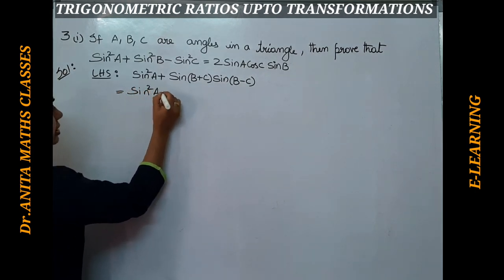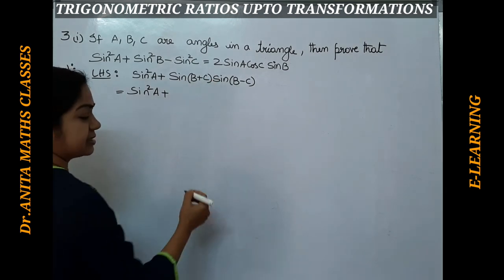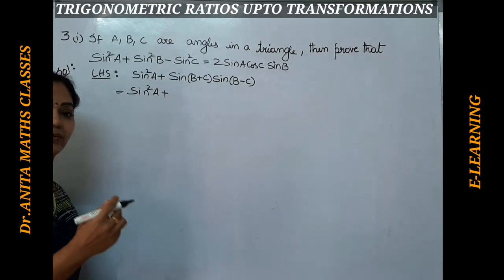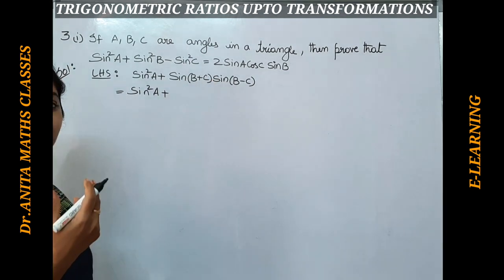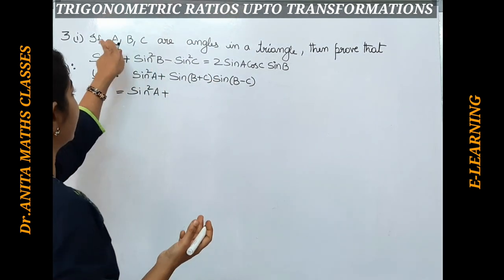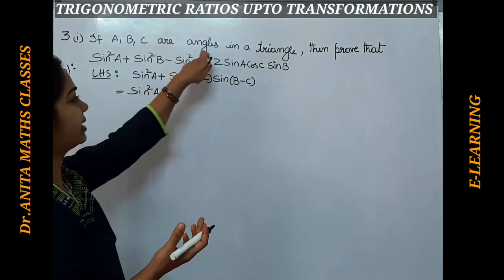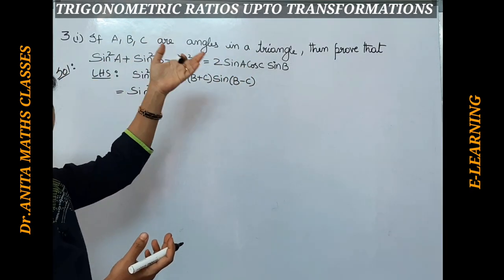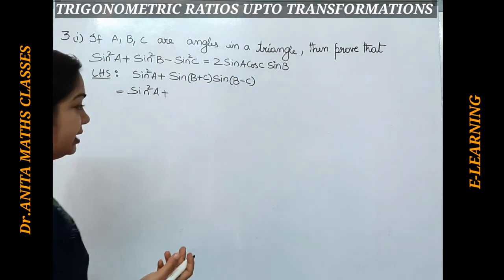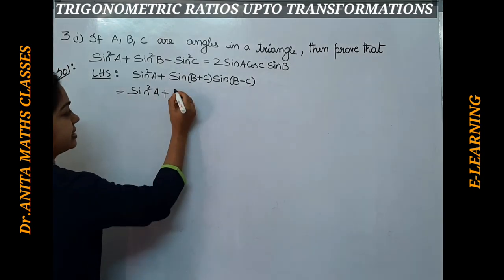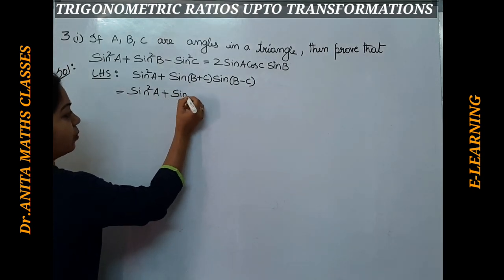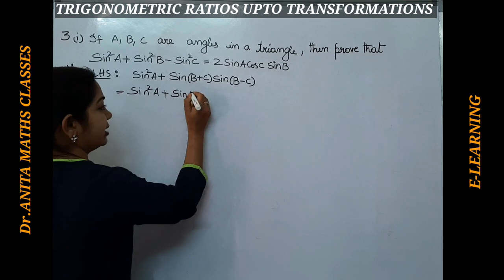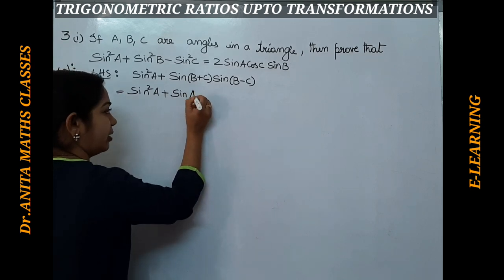Now we will use the property that sin(b+c) = sin(180° - a), because a, b, c are angles in a triangle and a + b + c = 180°, so b + c = 180° - a. Therefore sin(180° - a) = sinA.